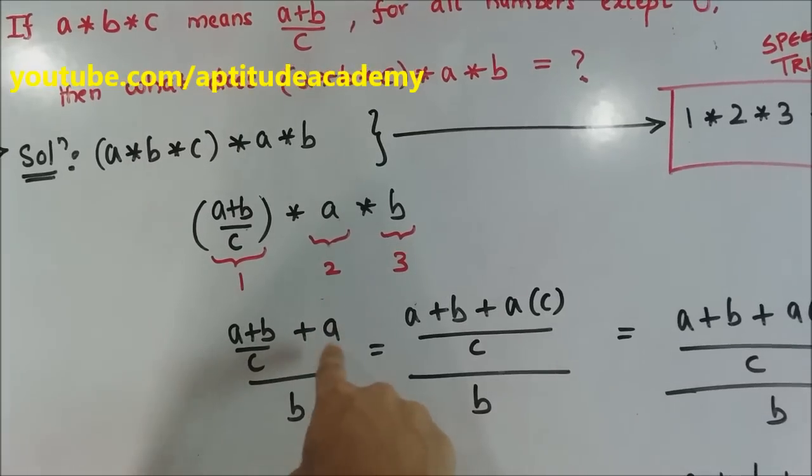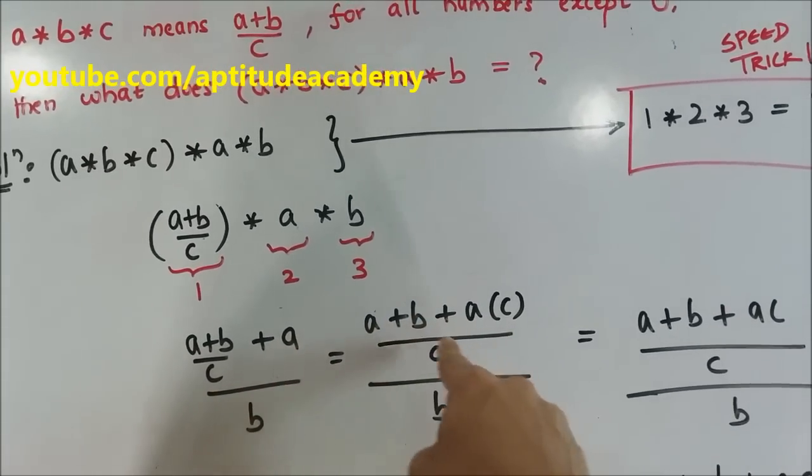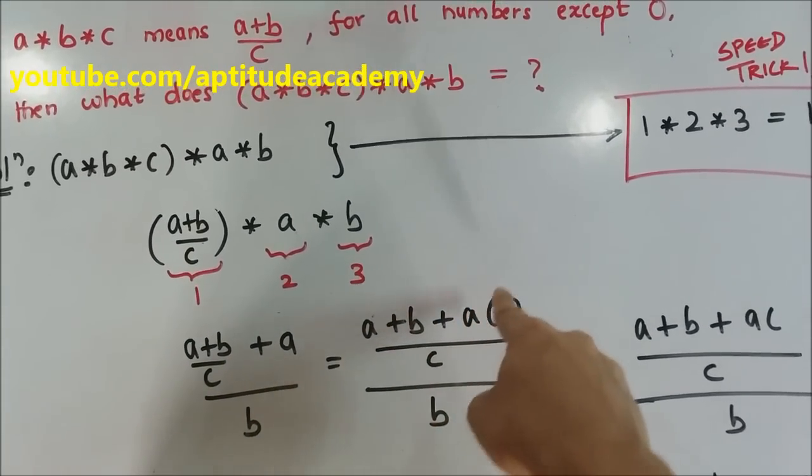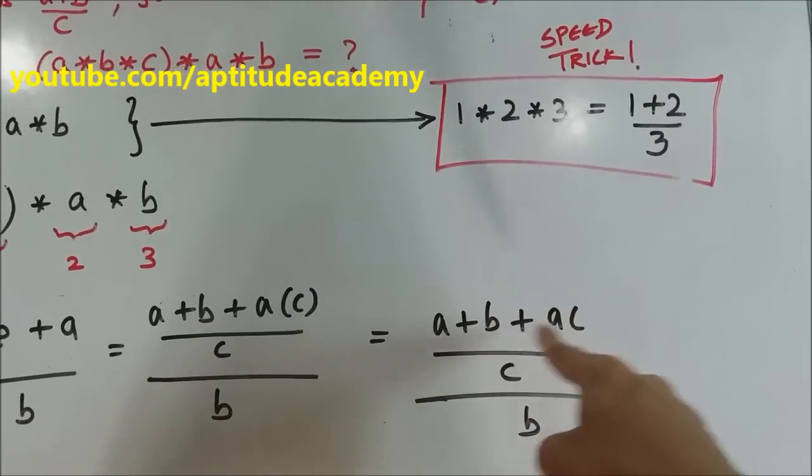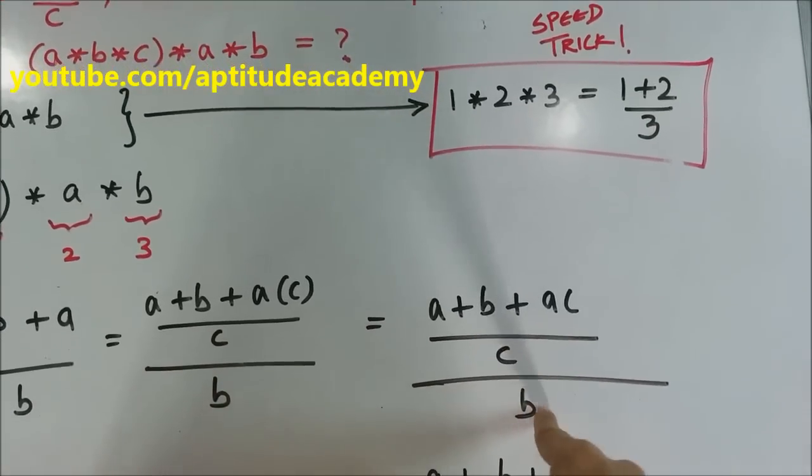Since this is A by 1, you take a simple LCM. So divide by C here. A plus B plus A into C, the whole divided by B. This gives you A plus B plus AC divided by C, divided by B.